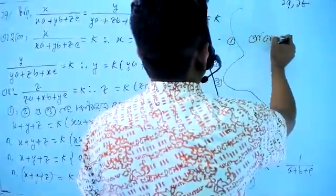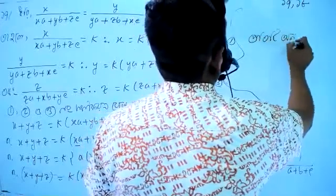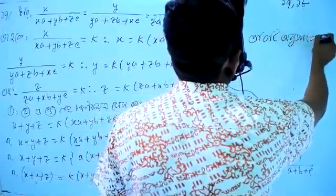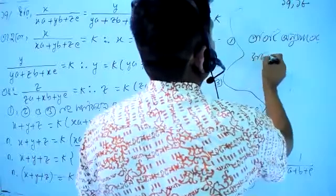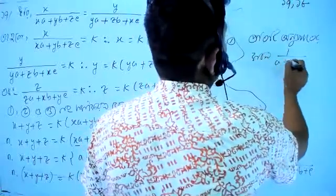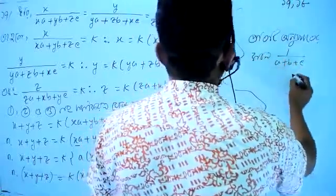So each value — 1 by a plus b plus c — is shown.